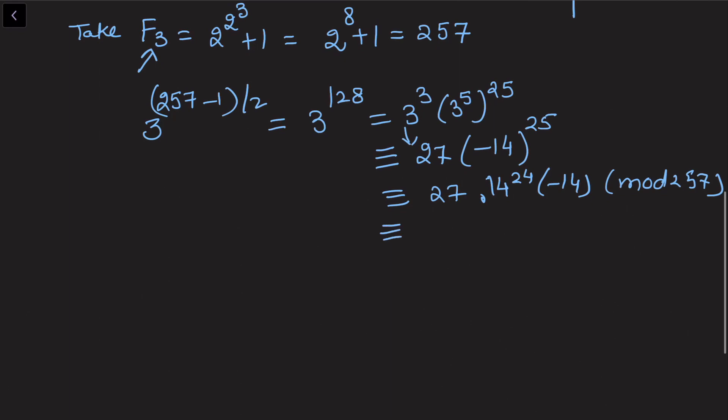This equals 27 · 19, which is further congruent to 513. And 513 ≡ -1 (mod 257), and hence the result holds.